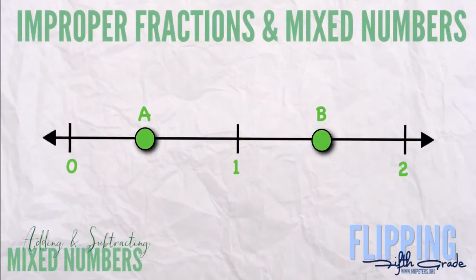Today we're going to be talking about improper fractions and mixed numbers. First, we must define what they are. An improper fraction is when your numerator is greater or equal to your denominator. A mixed number is a number that has a proper fraction and a whole number.